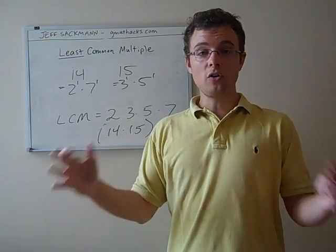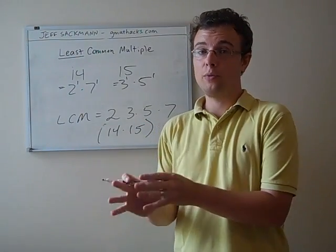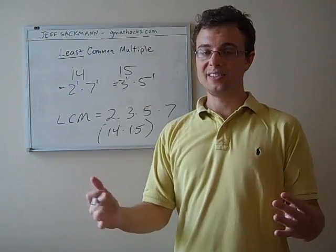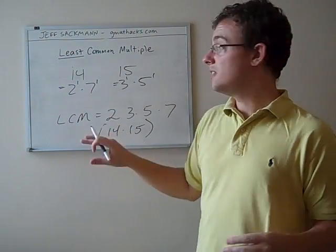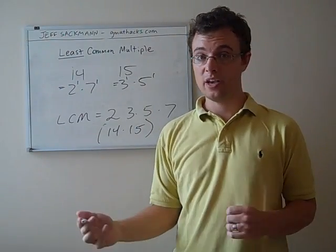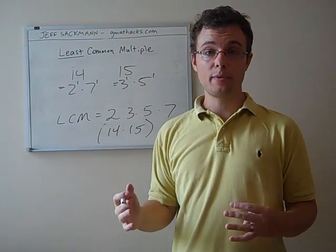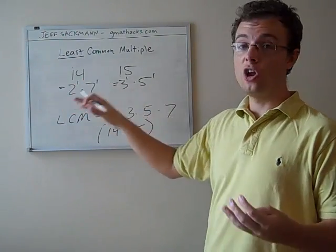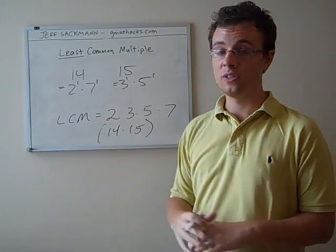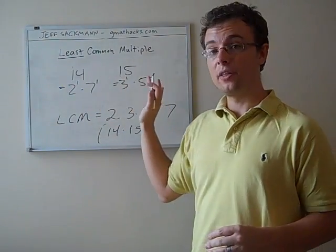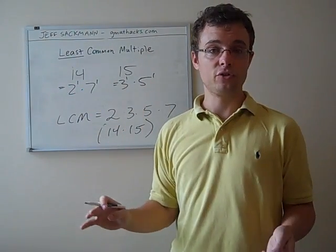So in this case, all those steps were really just double checking that 14 and 15 have nothing in common. So the lesson to draw from this example is if the two numbers have no prime factors in common, like 14 and 15, the least common multiple is simply the product. So in a case like 14 and 15 where you might know without even doing the prime factorizations, that there's no prime factors in common, you can just multiply them together and you're done. End of story.